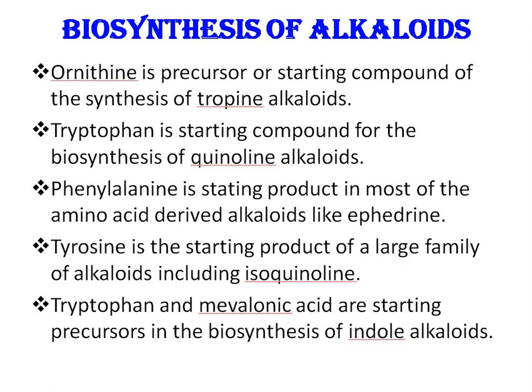Next is biosynthesis of alkaloids. Biosynthesis of different groups of alkaloids has been investigated using precursors labeled with radioactive atoms — precursors like ornithine, tryptophan, phenylalanine, tyrosine, etc. Ornithine is an amino acid that is the precursor or starting compound for synthesis of tropine alkaloids. Tryptophan is the starting compound for quinoline alkaloids. Phenylalanine is a starting product in most amino acid-derived alkaloids, like ephedrine. Tyrosine is the starting product of a large family of alkaloids including isoquinolines, and tryptophan and mevalonic acid are starting precursors in the biosynthesis of indole alkaloids.